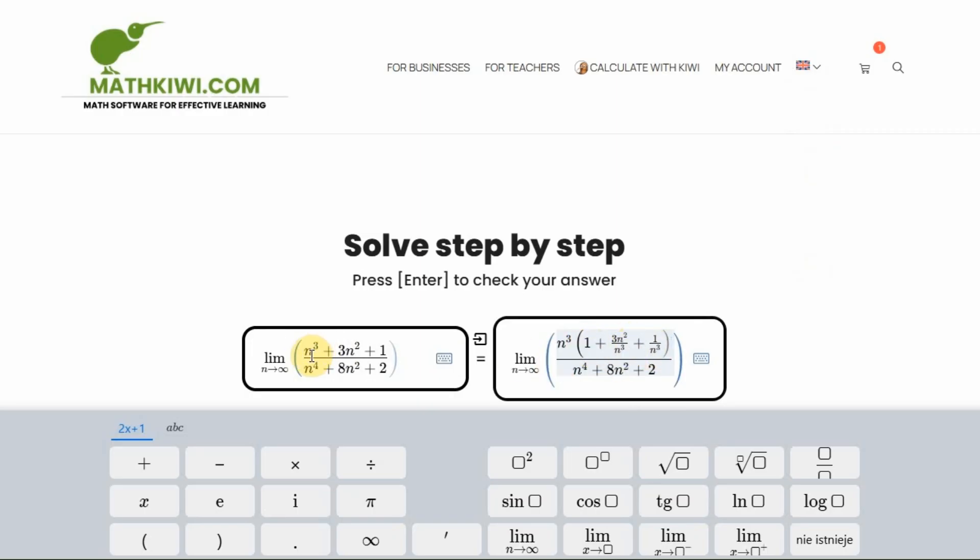The 1 is there because there was already n to the third here, and I kind of divided n to the third by n to the third in my head, and that's why I got 1 here. I didn't do anything in my head with this. I just rewrote 3n squared over n to the third. Plus, there was a 1 here over n to the third.